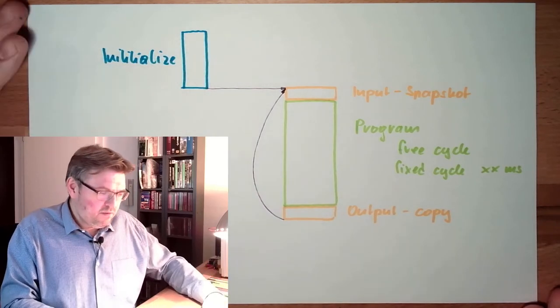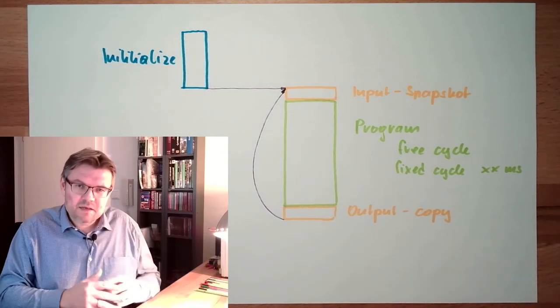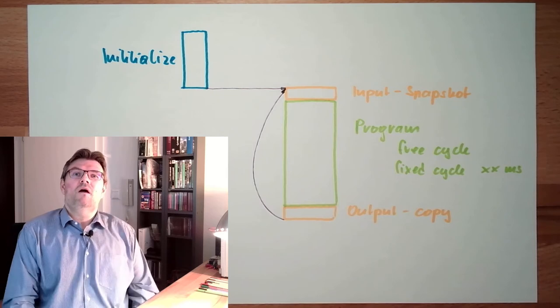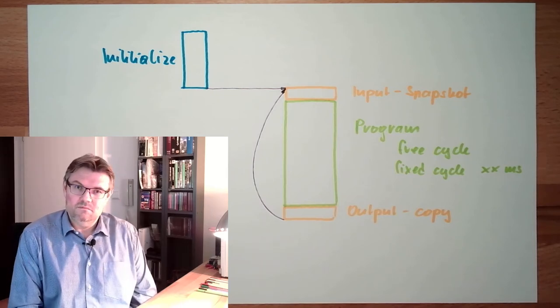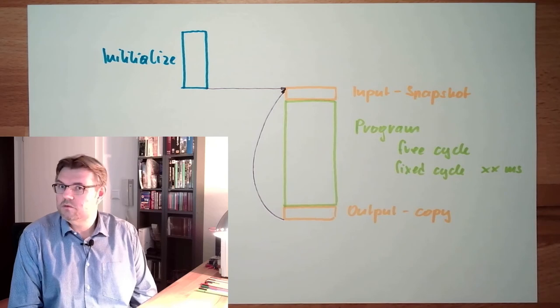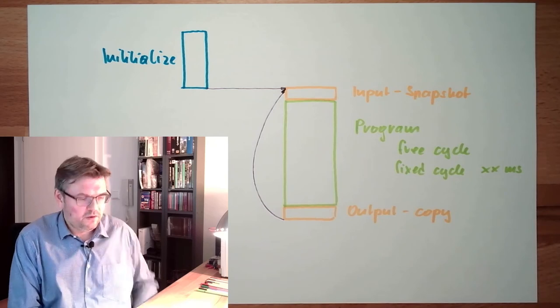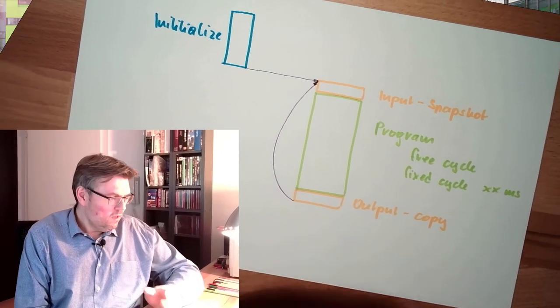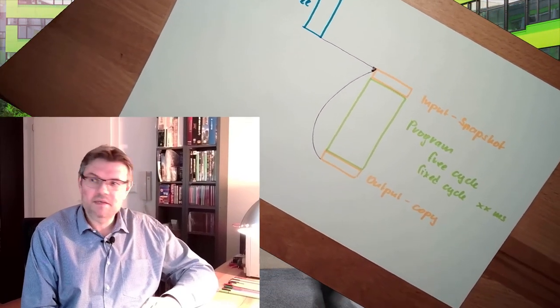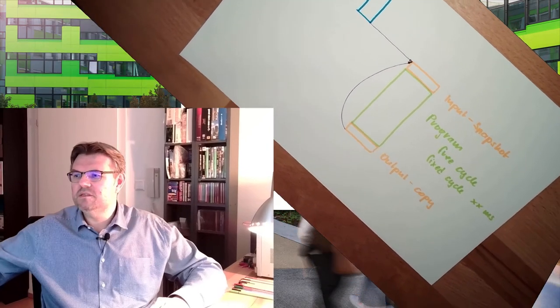So it's a little bit more complex but basically our Arduino is something like a PLC - input, output, and in between there is the logic. So that's the basic program cycle of a PLC.